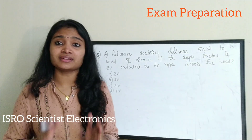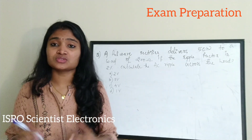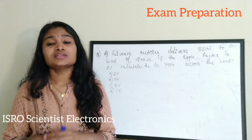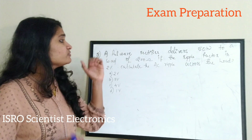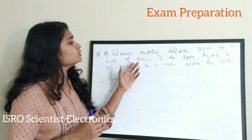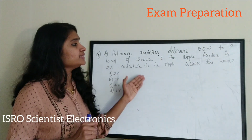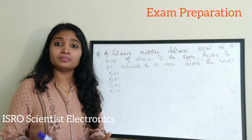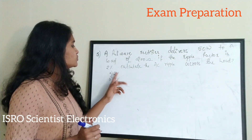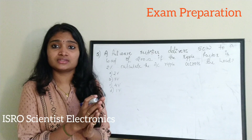The next question is from the rectifier section. A rectifier converts AC to DC — given an AC sine wave at the input it produces a DC output. A full wave rectifier delivers 50 watts to a load of 200 ohms. The ripple factor is 2%. Calculate the AC ripple voltage across the load. The options are: A) 2 V, B) 5 V, C) 4 V, D) 1 V.